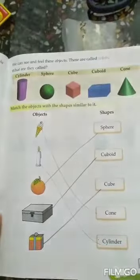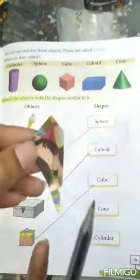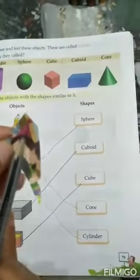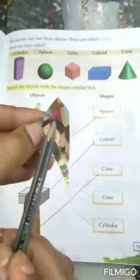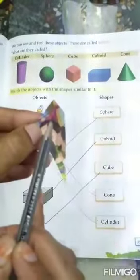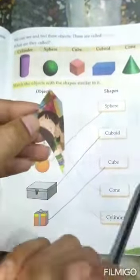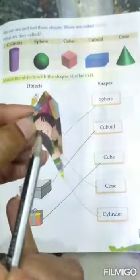Yes, see the girl is wearing the cap. See the birthday cap she is wearing. What is the shape of this birthday girl's cap? Cone. You eat ice cream cone. Aap ice cream khaate ho. That is also a cone.